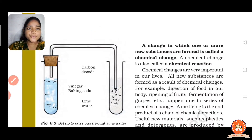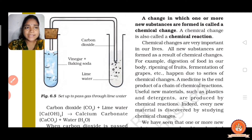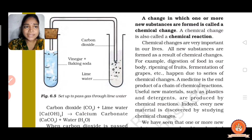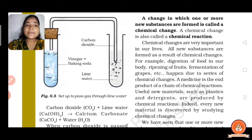More examples of chemical changes are: digestion of food in the human body, ripening of fruits, fermentation of grapes, etc. Also in medicines, chemical reactions take place. Useful materials like plastics and detergents are produced by chemical reactions.